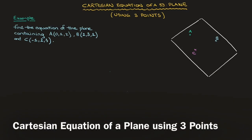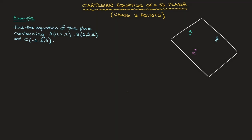Hi everyone, let's learn how to find a Cartesian equation of a plane using the coordinates of three points which are contained in it. This scenario is illustrated on the right-hand side of the screen. We can see a plane with three points, A, B, and C, and we want to find this plane's Cartesian equation.